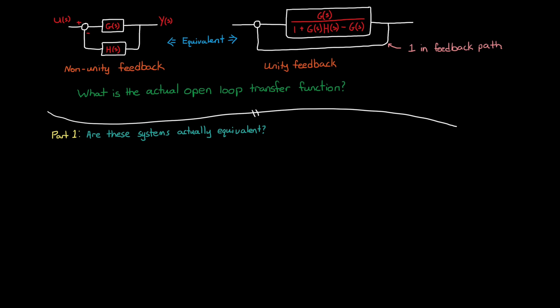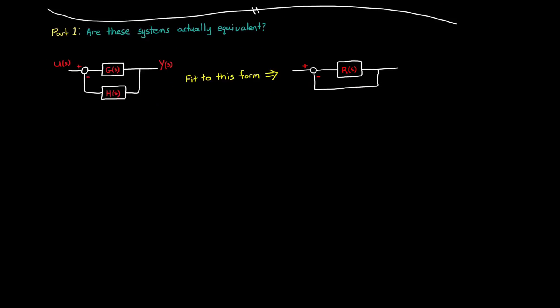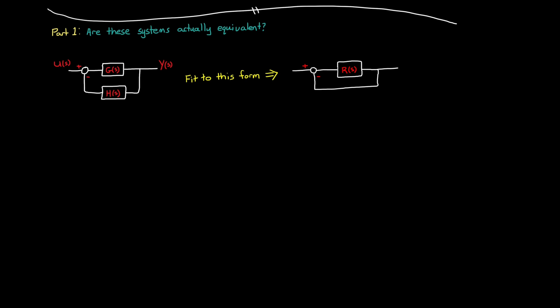The way we'll go about finding this out is with some block diagram algebra. Let's take the non-unity feedback system down from above. And what we want to do is rewrite this block diagram to fit into a unity feedback form. Since we don't know yet what the forward path transfer function will be, I'm just going to give the arbitrary designation R.